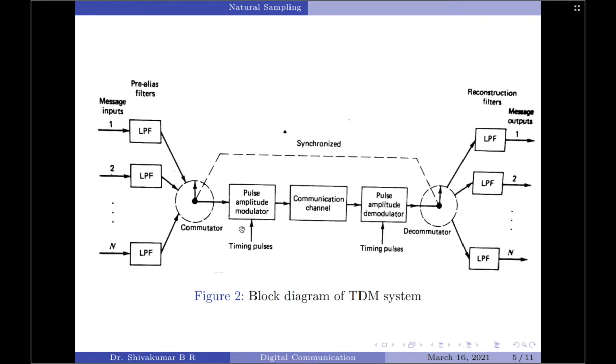The concept of TDM can be better understood by studying the block diagram shown here. At the input, we have N message signals indicating the presence of several information signals. Each input message signal is first passed through a low-pass pre-alias filter to remove the high frequencies that do not contribute much to the formation of the information signal. The output of these pre-alias filters are then applied to a commutator which is usually implemented using an electronic switching circuit.